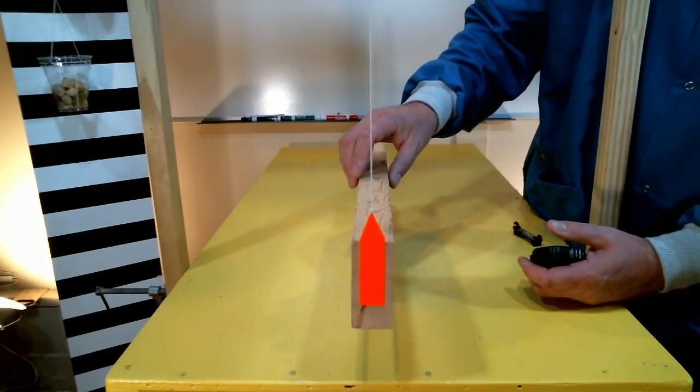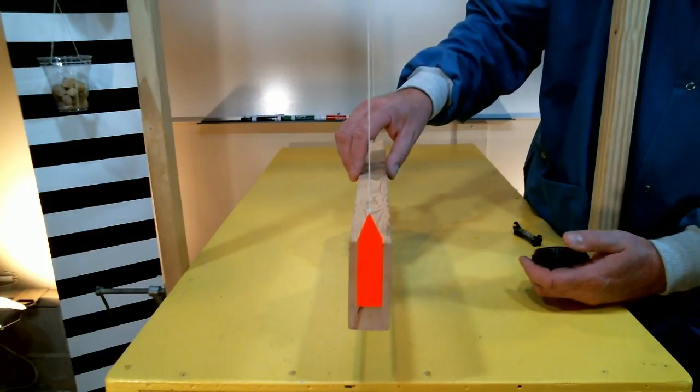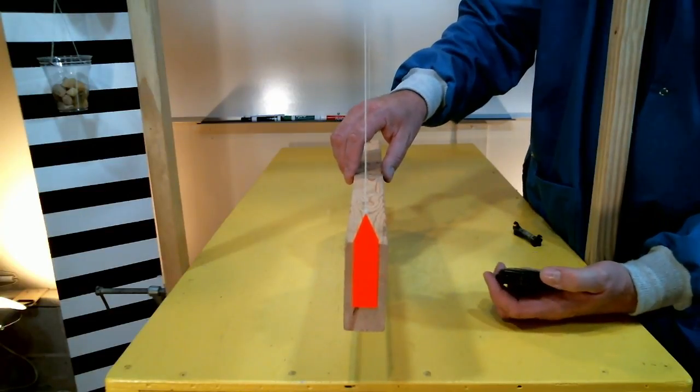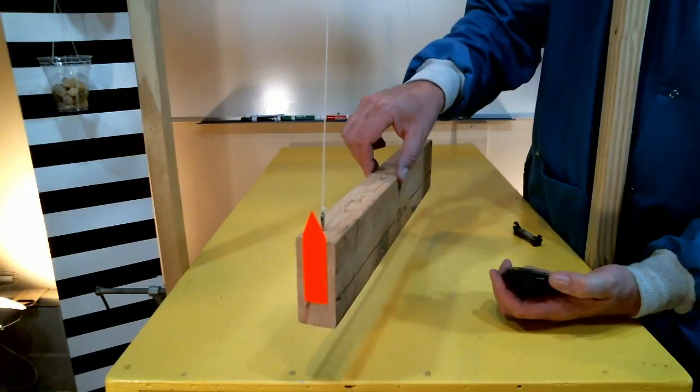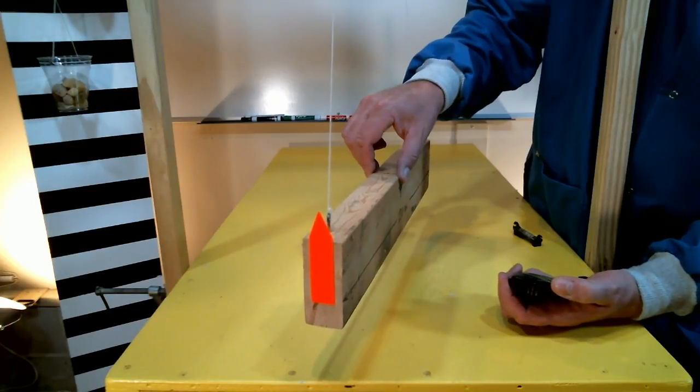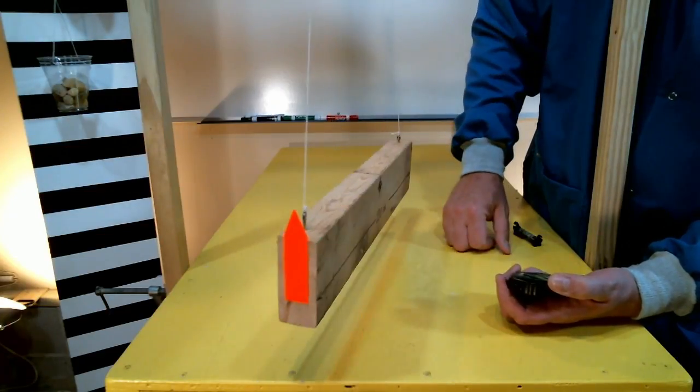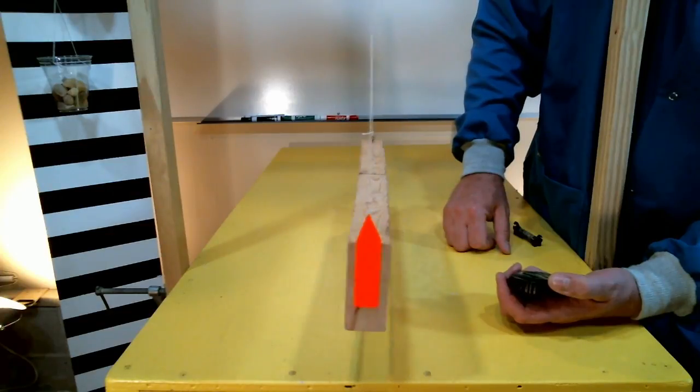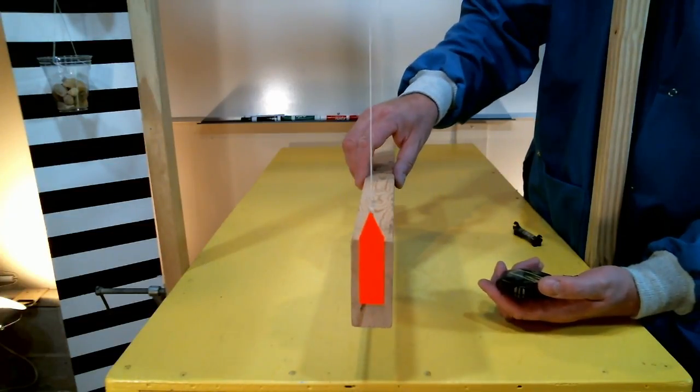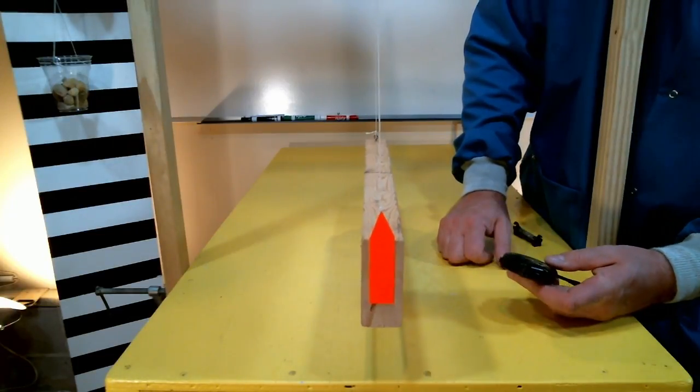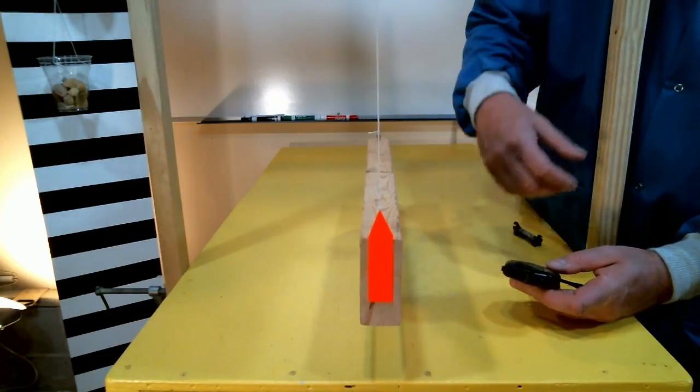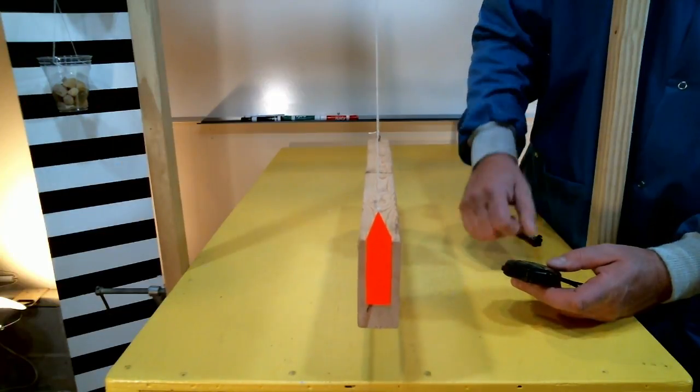Now we're ready to make the measurements on our actual test article, our wooden block. Get my stopwatch ready. Put an initial deflection in the test article. Three, two, one, start. One, two, three. Okay so three oscillations. I got about 3.44 seconds for three oscillations. So I divide that by three to get the time it takes for one oscillation.